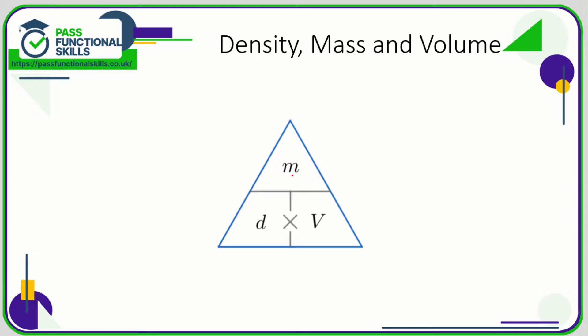Let's take a look at density, mass and volume. If you're familiar with the speed-distance-time triangle, we've got another triangle here for density, mass and volume. You just need to make sure you write it out correctly, otherwise it's completely useless. If you're working out density, put your thumb over density — density is mass over volume. If you want volume, put your thumb over volume — volume is mass over density.